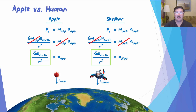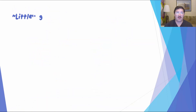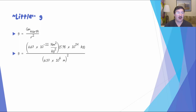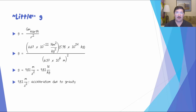It should not surprise you that two objects, even of different masses, both experience the same acceleration near the surface of the Earth. This quantity is what we define as little g. Little g equals big G, the universal gravitational constant, multiplied by the mass of the Earth divided by the square of the Earth's radius. Plugging in those values, little g is 9.81 meters per second squared, or 9.81 newtons per kilogram — defined as the acceleration due to gravity or the gravitational field strength, respectively.